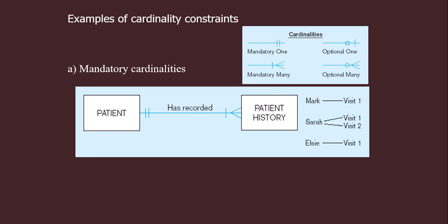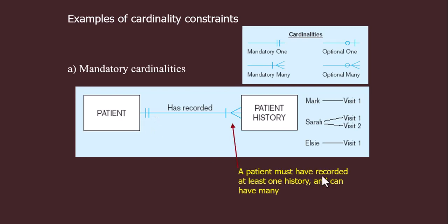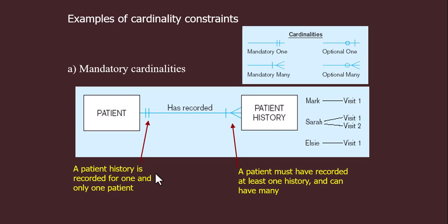This is mandatory many — one patient can have many patient histories, but at minimum there should be one history if the patient is recorded. This means the patient must have at least one patient history; there is nothing optional here. And one patient history must belong to only one particular patient. So a patient must have recorded at least one history and can have many; similarly, a patient history is recorded for one and only one patient.